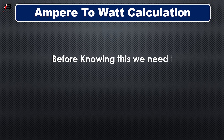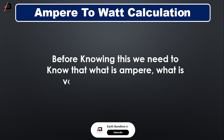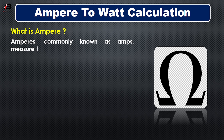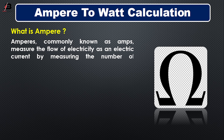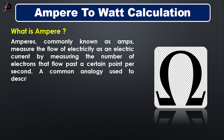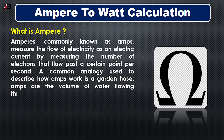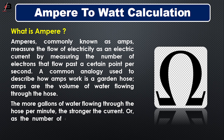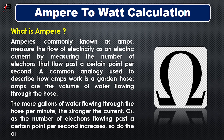Before knowing this, we need to know what is ampere, what is voltage, and what is watt. Ampere, commonly known as amps, measures the flow of electricity as an electric current by measuring the number of electrons that flow past a certain point per second. A common analogy used to describe how amperes work is a garden hose — amperes are the volume of water flowing through the hose. The more gallons of water flowing per minute, the stronger the current, and as the number of electrons flowing past a certain point per second increases, so do the amperes.